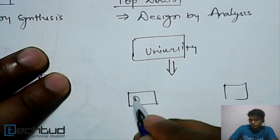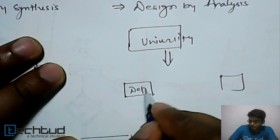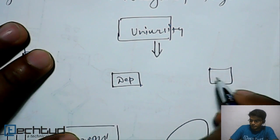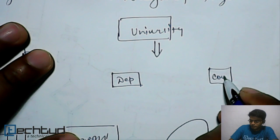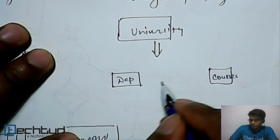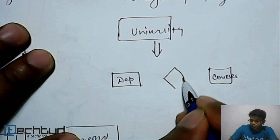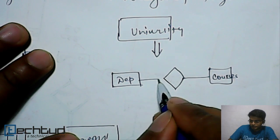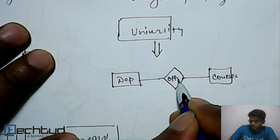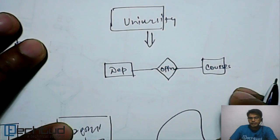First is department, and then another one is courses. So departments are offering courses. So you can say like department offers courses, something like that.